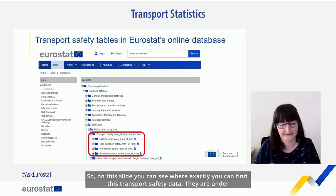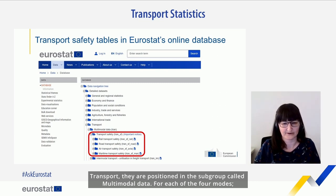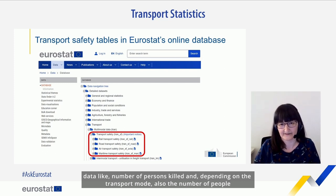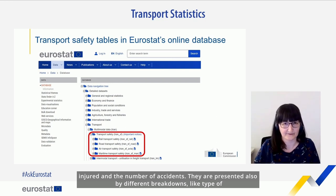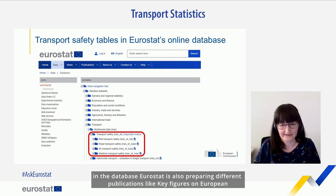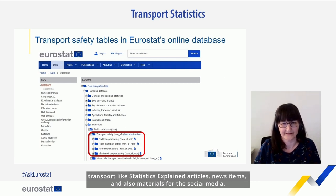Our main goal is to reduce the burden for member states reporting the same data to different institutions. That is why Eurostat has signed agreements with the above-mentioned institutions so that they provide us the data and we disseminate it in our database. Transport safety data can be found under transport in the subgroup called multimodal data. For each of the four modes — rail, road, air and maritime — this data is disseminated on an annual basis, including number of persons killed and depending on the transport mode, number injured and number of accidents. Breakdowns are available by type of accident, category of persons involved, type of vehicle, etc. Eurostat also prepares publications like key figures on transport, statistics explained articles, news items, and materials for social media.